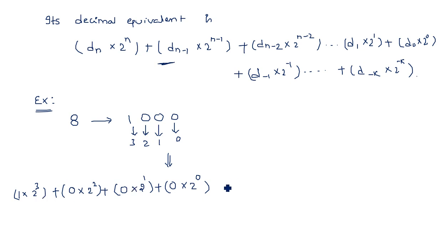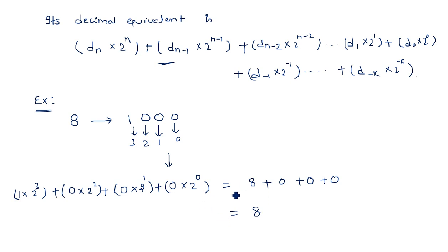So 2^3 is 8. The other terms — 0 × 2^1 = 0, 0 × 2^2 = 0 — all become zero, giving the value 8. This number system is also known as the 8-4-2-1 number system, because 2^3 = 8, 2^2 = 4, 2^1 = 2, and 2^0 = 1. So 8-4-2-1, multiplied by the corresponding bits.